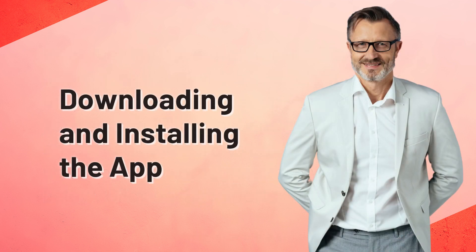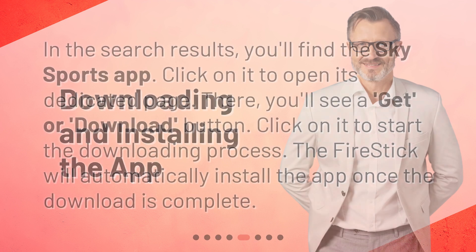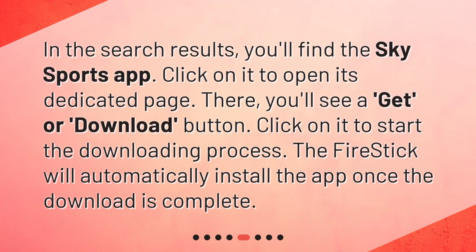Downloading and installing the app: in the search results, you'll find the Sky Sports app. Click on it to open its dedicated page. There, you'll see a Get or Download button. Click on it to start the downloading process. The Firestick will automatically install the app once the download is complete.